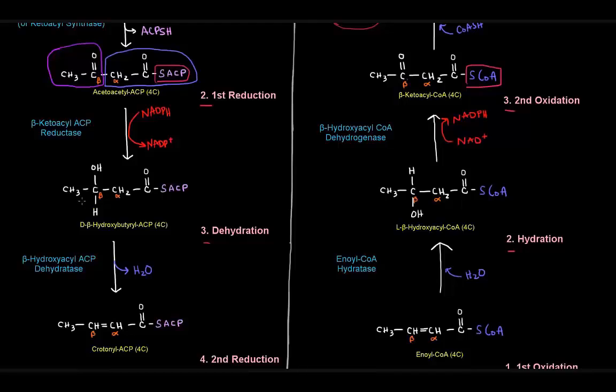Right here, this is a beta-hydroxyacyl-ACP, and this one's a CoA. One of the differences here though is that this one has D-stereochemistry at the beta-carbon, and this one has L-stereochemistry, so they are opposite at that chiral carbon. That's one thing that's different about those guys.